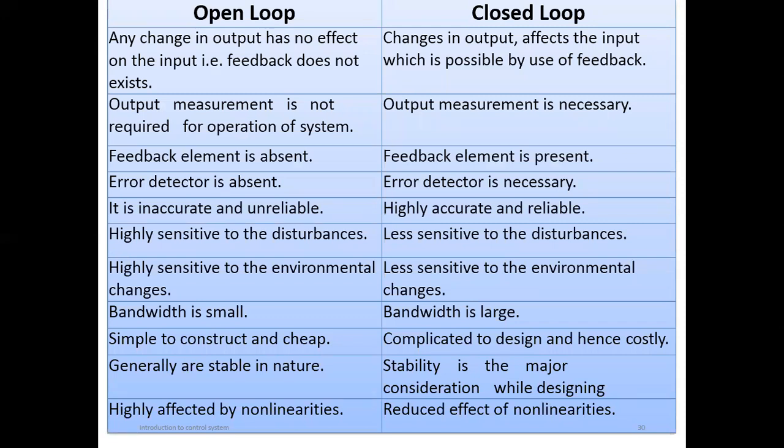Comparing open loop and closed loop: in open loop, any change in output has no effect on the input; in closed loop, the output change does affect the input. Output measurement is not required in open loop but is necessary in closed loop. The feedback element and error detector are absent in open loop but present in closed loop. Open loop is inaccurate and unreliable, while closed loop is highly accurate and reliable. Open loop is highly sensitive to disturbances; closed loop is less sensitive, as the control element compensates.